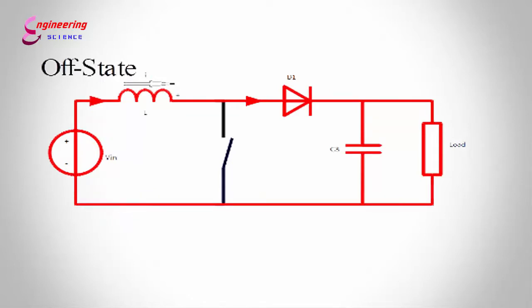When the switch is opened, current will be reduced as the impedance is higher. The magnetic field previously created will be destroyed to maintain the current toward the load. As a result, two sources will be in series causing a higher voltage to charge the capacitor through the diode.